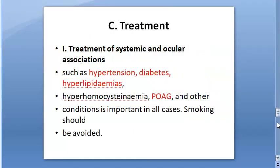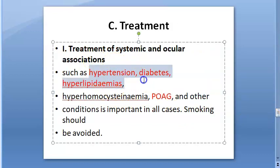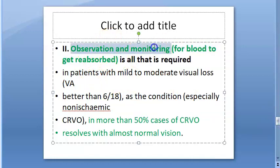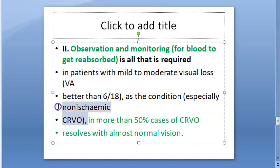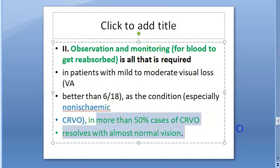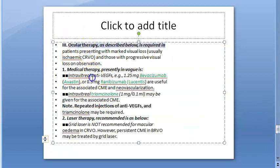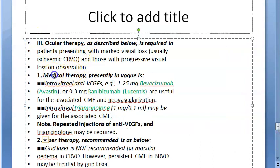Treatment: control hypertension, diabetes, dyslipidemia, hyperlipidemia, primary open angle glaucoma — and smoking should be avoided. For observation and monitoring, blood can get reabsorbed, especially in non-ischemic CRVO. More than 50 percent of non-ischemic CRVO cases resolve with almost normal vision just by waiting and observing. Then you move on to ocular therapy if needed.